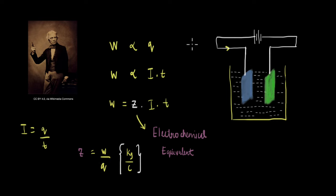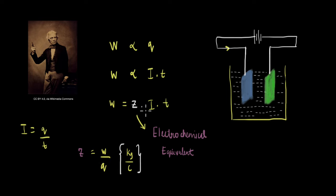If we know the value of z and the current i passing through the circuit, and we know for how long the current passes, we can calculate the amount of substance deposited. However, z is a value calculated by experiment. The question is: can we rewrite z in terms of quantities we already know for a given electrode material, to make calculations easier?